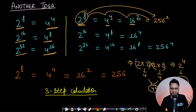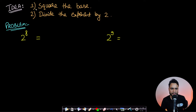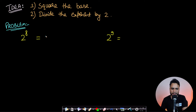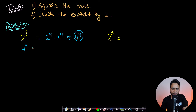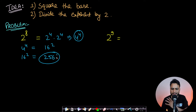Let's solve an example with this idea. The idea is just squaring the base and dividing the exponent by 2. Take 2 to the power 8: write it as 2 to the power 4 times 2 to the power 4, which equals 4 to the power 4. Then 4 to the power 4 becomes 16 to the power 2, and 16 to the power 2 becomes 256 to the power 1. Whenever you reach power 1, you stop — so 256 is the final answer for 2 to the power 8.